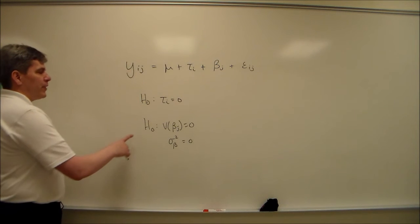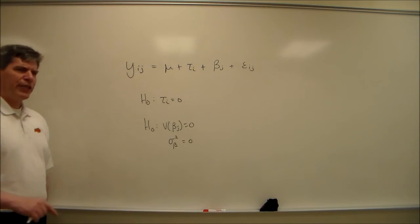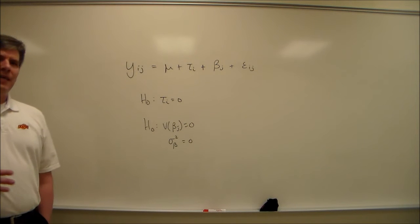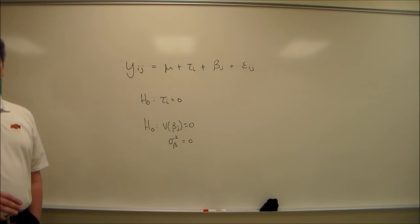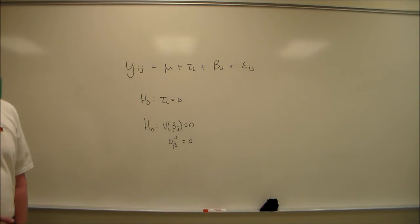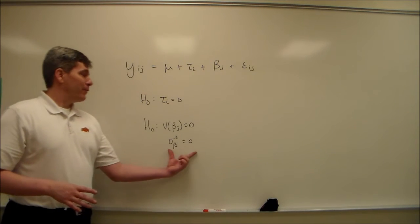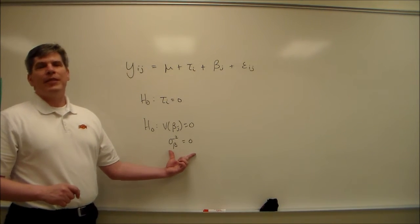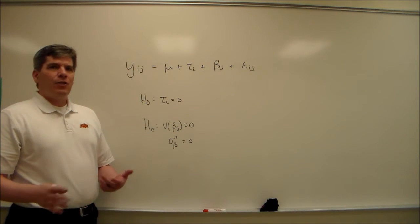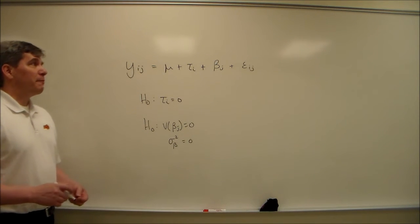And if we fail to reject the null hypothesis that the variation of the beta is zero, then we're actually concluding that that blocking is irrelevant. We may have done it, it didn't add anything to our understanding. So in this case, from example 6.4 I believe, we found out that the teacher effect, we were unable to reject this null hypothesis for the teacher effect. Meaning, if there is variation caused by the teacher, it's so small that we did not detect it.